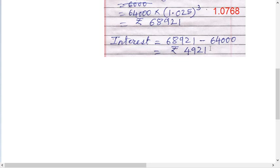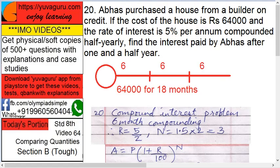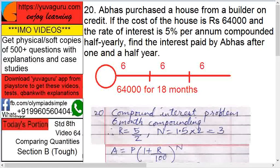He will be paying 4,921 after one and a half years. Both problems are tough — try them again by yourself. Always learn the tables up to 30, squares up to 30, and cubes up to 15. Also follow the Vedic mathematics videos, because math is not as simple as we learned in our earlier standards — multiplications are not as simple.